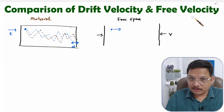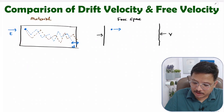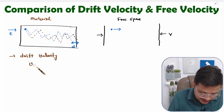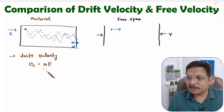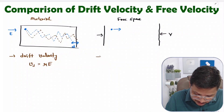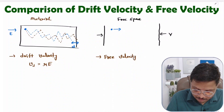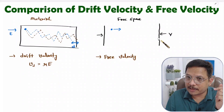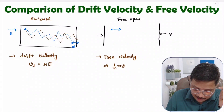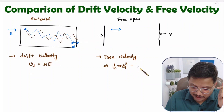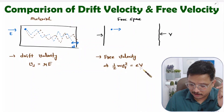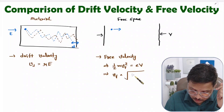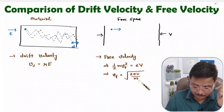So how do we calculate drift velocity and free velocity? Drift velocity is associated with electric field and mobility. Drift velocity vd equals mu times E — mobility times electric field. For free velocity, the kinetic energy of the charge carrier equals the potential energy applied, so half m vf squared equals q times V. Therefore, free velocity vf equals the square root of 2eV divided by m.